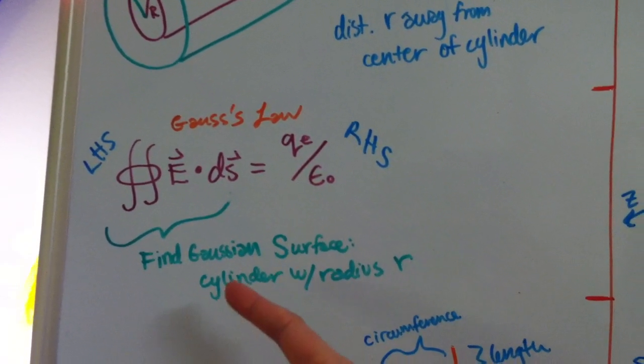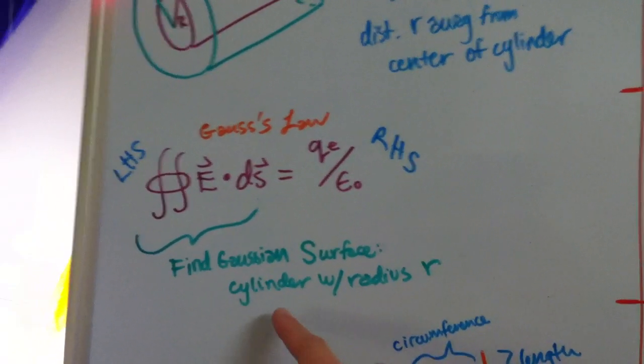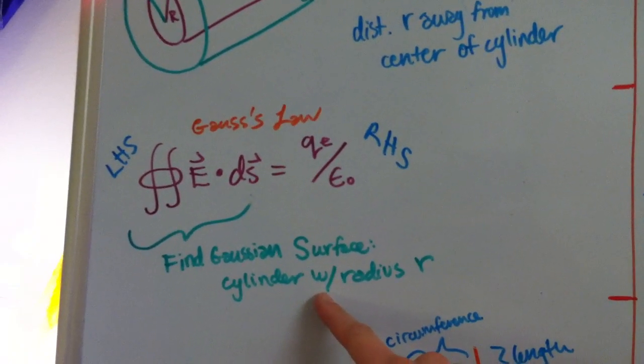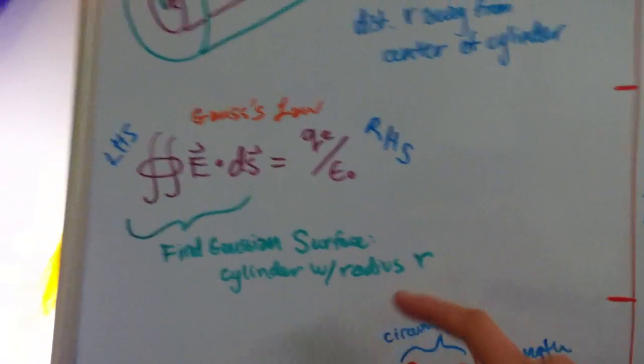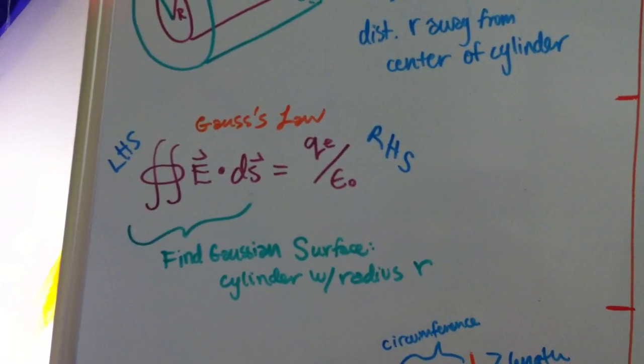the electric field is always perpendicular to the surface. So since our shape is a cylinder, we're going to use a cylinder as our Gaussian surface, and we're going to say our cylinder has a radius little r, because we're little r away from the center of our charge cylinder.